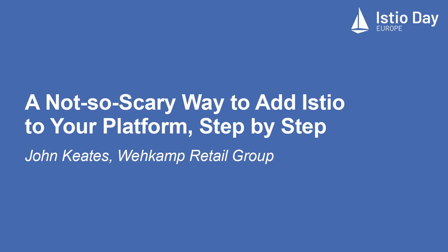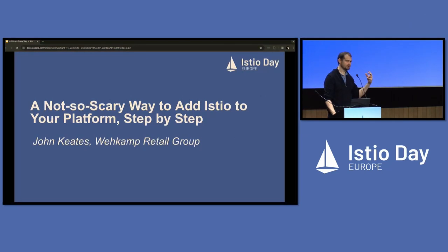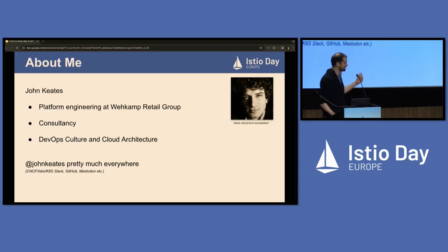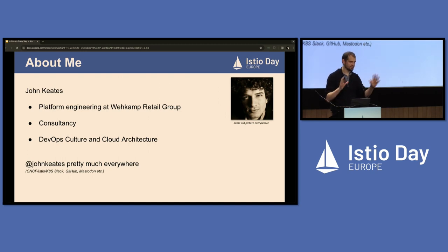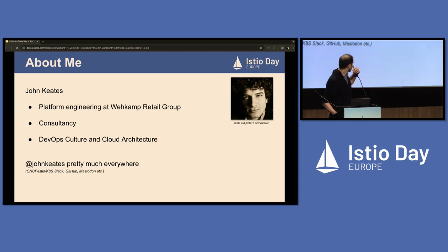Hello everyone, welcome to my talk. This is, as the title suggests, about a way that is not so scary but you can still add and use Istio on your platform. A little bit about me: my name is John and I work at the Vekamp retail group in the Netherlands. I've been doing platform engineering for about seven years — it wasn't called platform engineering back then. I've also been doing a lot of consultancy, mostly to keep a fresh and diverse perspective, revolving around DevOps culture and cloud-native architecture. You can find me on all the Slacks: Kubernetes, Istio, CNCF, whatever you like.